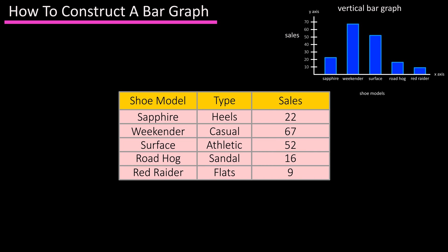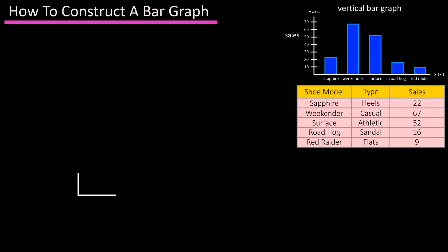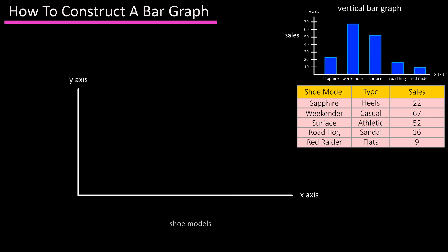Bar graphs are easy to construct. In our example, you simply draw an x and y axis, label the x-axis as shoe models, and write in the different models of shoes at equal distances from one another on the x-axis. Then label the y-axis units sold.